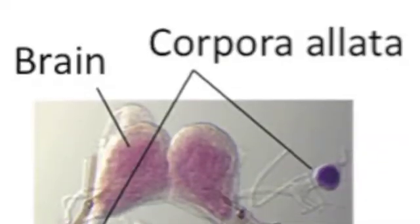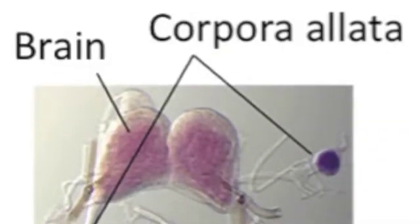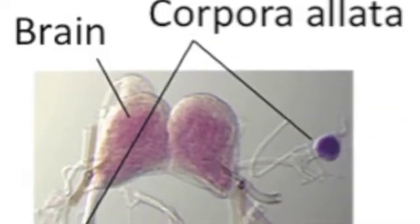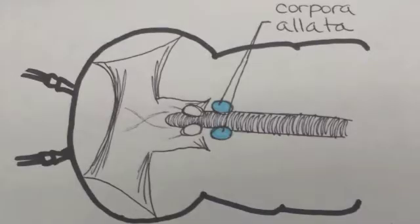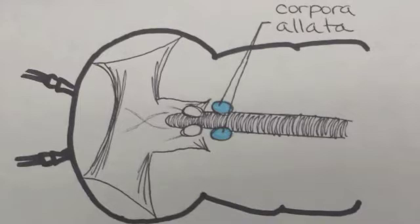In more primitive insects, the Corpora Allata are located toward the ventral portion of the head, but over time the Corpora Allata have migrated to a more dorsal location. Juvenile Hormone is not stored in the Corpora Allata — it is released as it is synthesized.